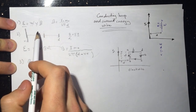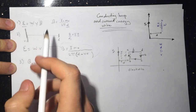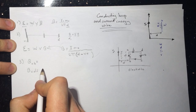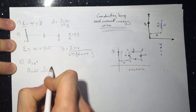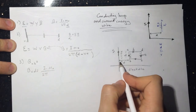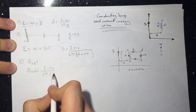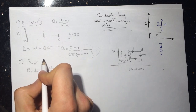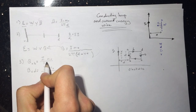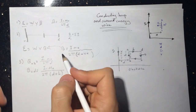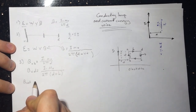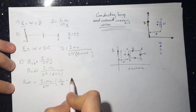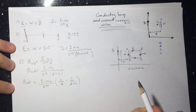The B on side AB is the same as from question one: I₁μ₀ over 2πd. The B on side CD equals I₁μ₀ over 2π(d + L). So the net B on the loop equals I₁μ₀ over 2π times (1/d minus 1/(d+L)).